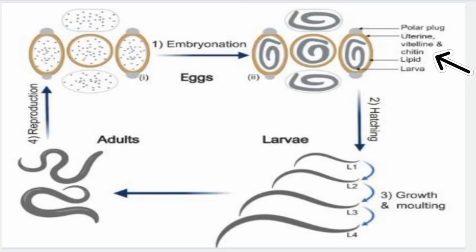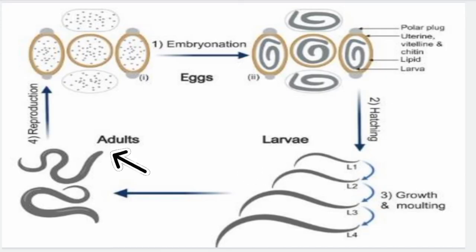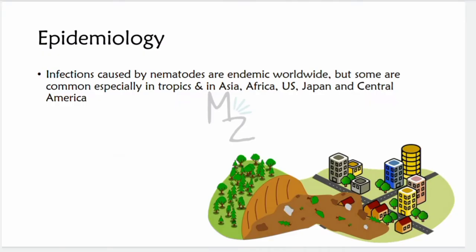The embryonated eggs contain structures such as a polar plug, lipid layer, and chitin layer, with a larva inside. On hatching, the larva is released and grows through molting — shedding its non-cellular outer cuticle layer and synthesizing a new one. The larva matures into adult form, which again releases eggs, and the cycle continues.